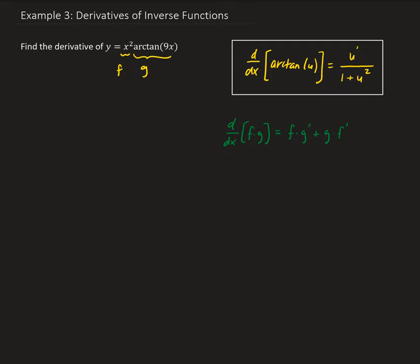So y prime, the derivative of y with respect to x, is going to be x squared times the derivative of arctan of 9x with respect to x, plus arctan of 9x times the derivative of x squared.